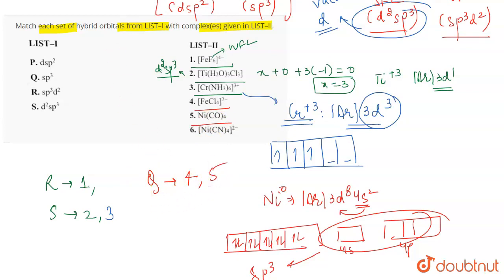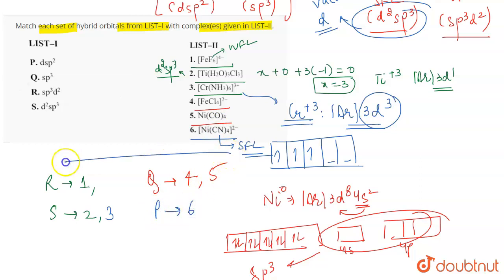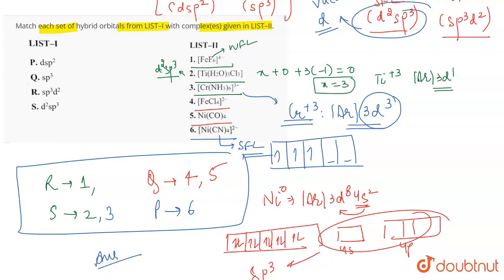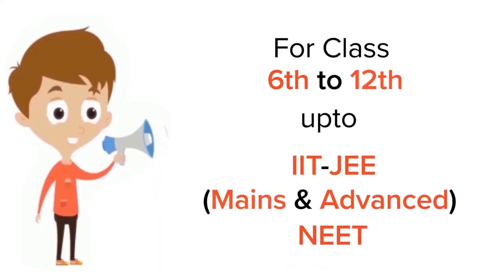This gives [Ni(CO)₄] a hybridization of sp³. So Q matches with both 4 and 5. For the last complex, [Ni(CN)₄]²⁻, this is a strong field ligand with coordination number four, and nickel in the +2 oxidation state shows dsp² hybridization. Therefore P matches with 6, and this is the correct complete match for the question.